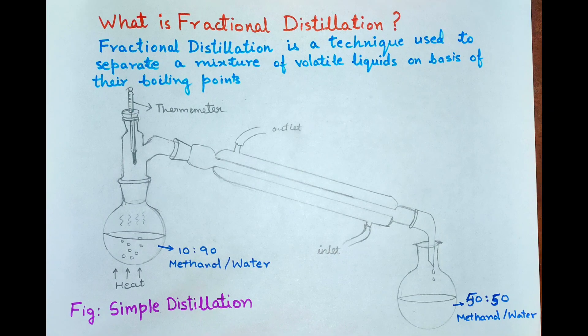Fractional distillation is a technique used to separate a mixture of volatile liquids on the basis of their boiling points. For example, we take a mixture of methanol and water of 10 to 90 ratio and then we simply distill it.